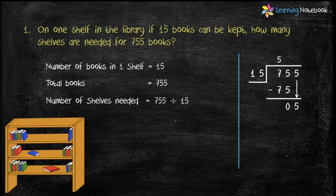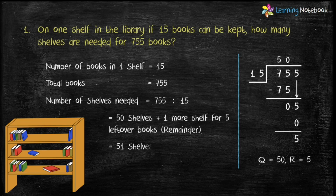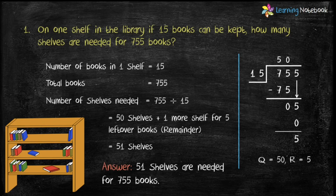15 into 0 equals 0, and 5 minus 0 equals 5. Therefore, quotient equals 50 and remainder equals 5. Number of shelves required equals 50, and there are 5 leftover books which is the remainder. So we need one more shelf to keep these 5 books. Therefore, 50 plus 1 equals 51 shelves are needed to keep 755 books.